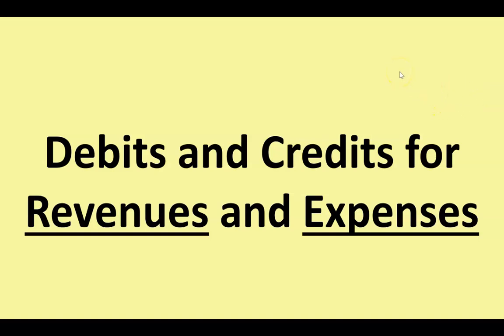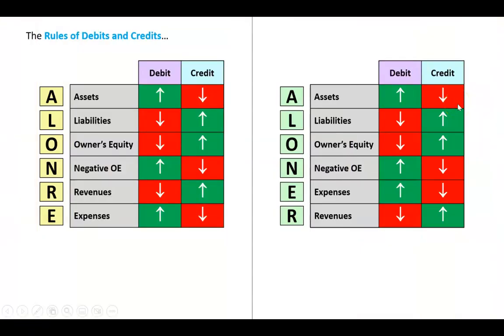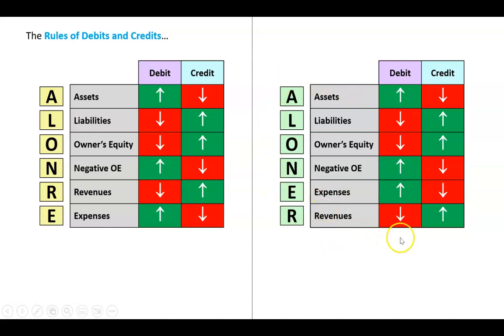Our final set of rules to learn about debits and credits are for revenues and expenses. We can remember them using the LONER mnemonic: assets, liabilities, owners equity, negative owners equity, revenues, and expenses. You can also change the order slightly — see the description for a link to a two-minute summary video covering all these rules.